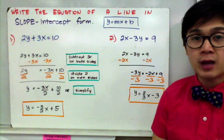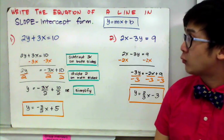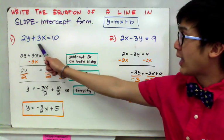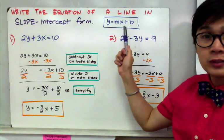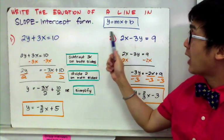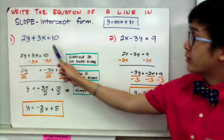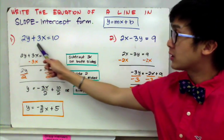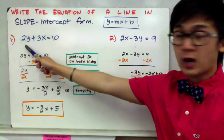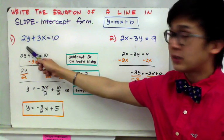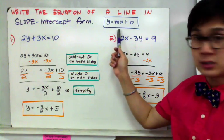Sometimes we need to rewrite a given standard equation of a line into the slope-intercept form. In this example, we have an equation in standard form: 2y plus 3x equals 10. To rewrite it in slope-intercept form, we need y by itself equal to a number with x plus b. Since we have 2y plus 3x equals 10, we need to get rid of 3x and then divide out the 2 from y — so two steps are needed.